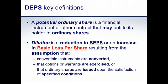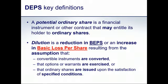When we say a potential ordinary share is dilutive, dilution is effectively a reduction in basic earnings per share. Total earnings might go up, but if basic EPS goes down due to a disproportionate increase in the denominator, that is dilution. What we're testing is the per-share measure, not total earnings. Dilution is a reduction in basic EPS — or an increase in basic loss per share — resulting from an assumption that convertible instruments are converted, options or warrants are exercised, or shares are issued upon satisfaction of specified conditions.